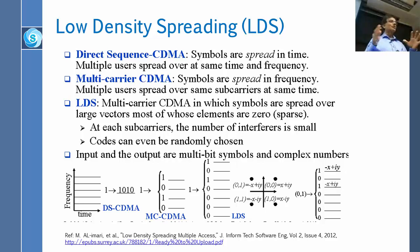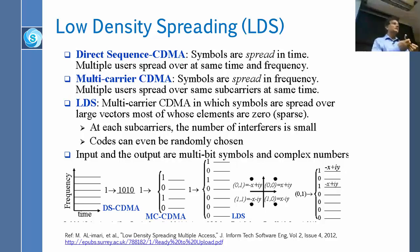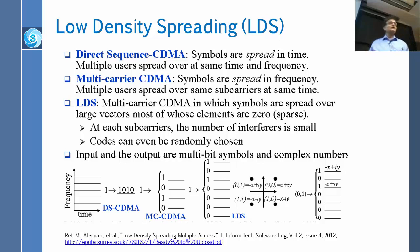When you read about LDS in books you will find complex numbers throughout, but the simplest way to understand it is: we have a large number of subcarriers, most of them carry zeros — we don't transmit on them — but we transmit on a small number of subcarriers, and the chance of collision is small, even if the codes are not orthogonal.